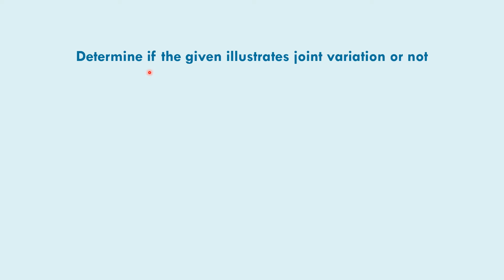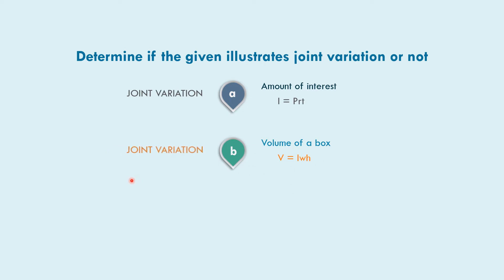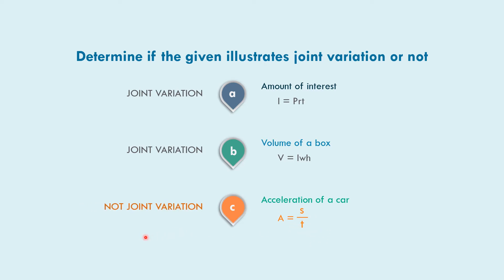Let us determine if the given illustrates joint variation or not. In example A, the amount of interest I equals p times r times t — this is joint variation. In example B, volume of a box V equals l times w times h — this is also joint variation. In example C, acceleration of a car: a equals s over t. We have an inverse relationship here, so this is not joint variation.